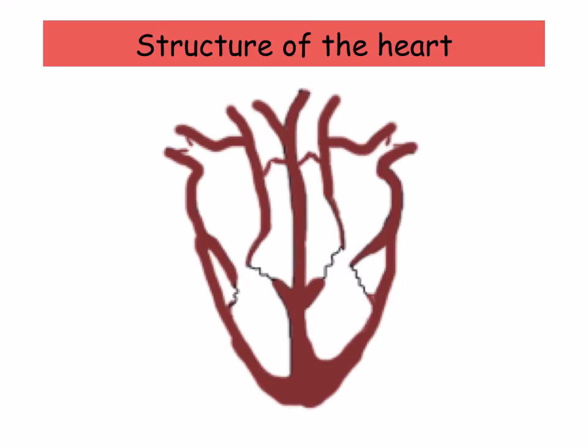If you cut the heart open, you'll notice four chambers and different valves and blood vessels. We went into detail on how to label the heart in the last topic. So just to recap, let's quickly run through the different parts of the heart. Remember to identify the left from the right — look for the side that has the thicker ventricular wall. This is your left side, since it has to pump blood all the way around the body.